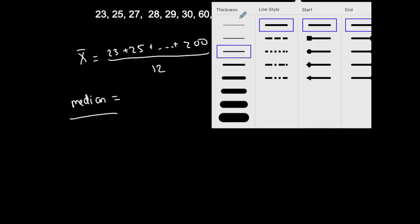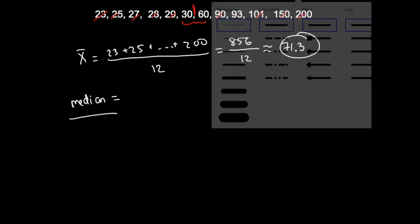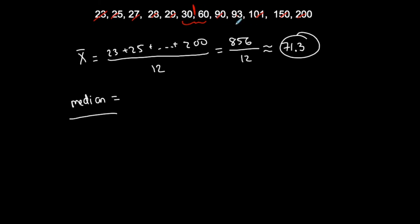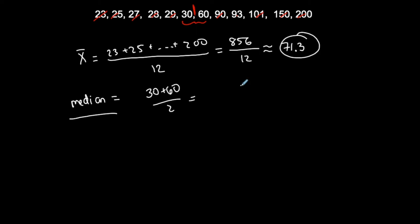Now let's find the median — the middle data value, listed from least to greatest, which it already is. I'll cross off the outer values working toward the center. I can see that 30 and 60 are the two middle values. Since I have an even number of data values, I land between two numbers. If I had an odd number, I'd land on exactly one middle number, but with an even count, I take the average of those two middle values.